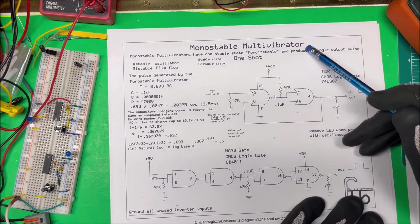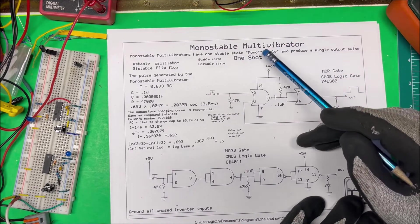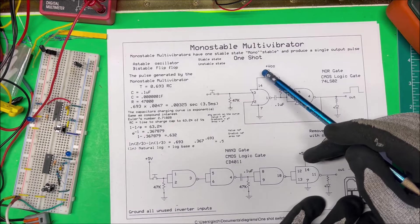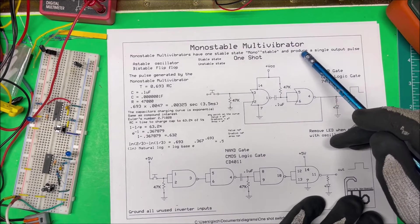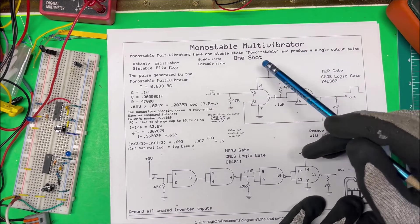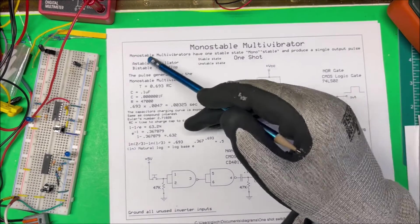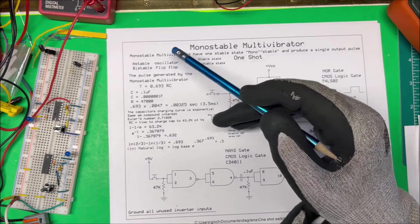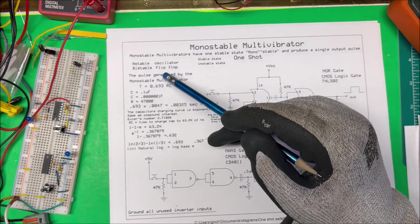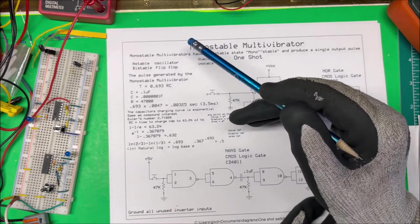Let's take a look at a monostable multivibrator. Monostable means one stable state and it produces a single output pulse. We call that a one-shot. Astable doesn't have a stable state and we use that as oscillators, and bistable has two stable states and we use those for flip-flops.